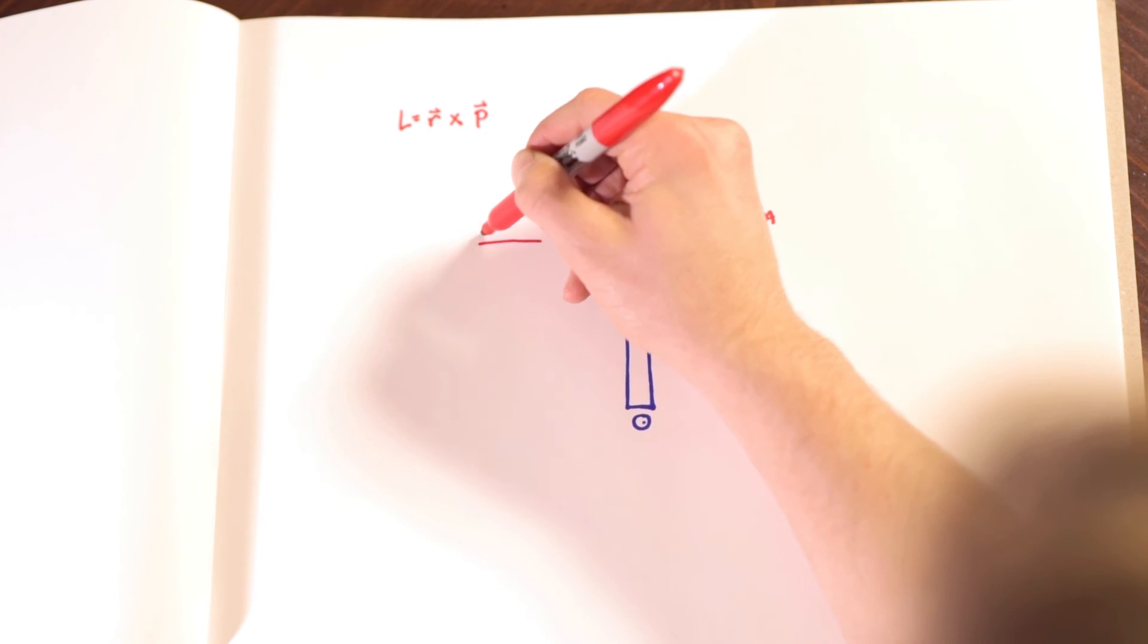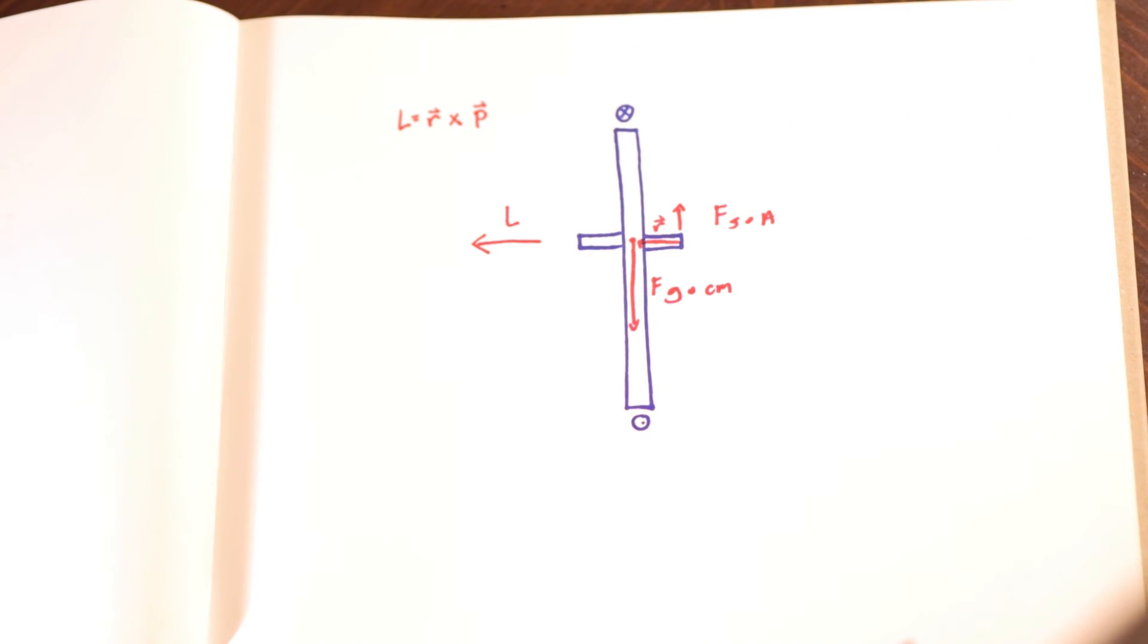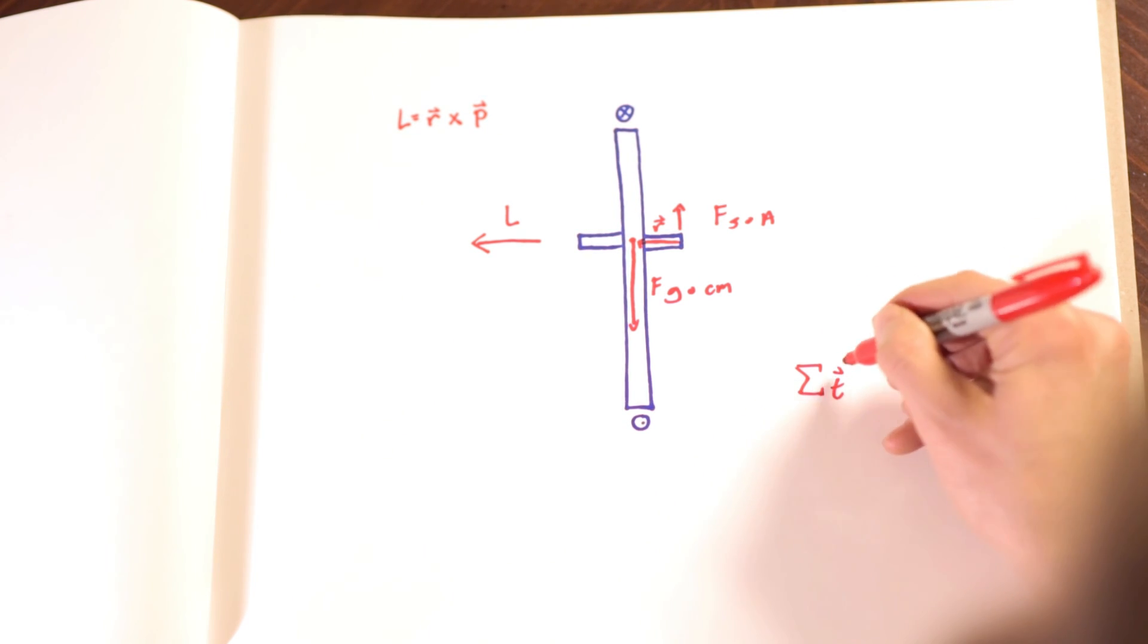Using the relationship between torque and angular momentum, it can be found that angular momentum is also created in the same direction. As the spin rate of the wheel increases, so does that angular momentum.